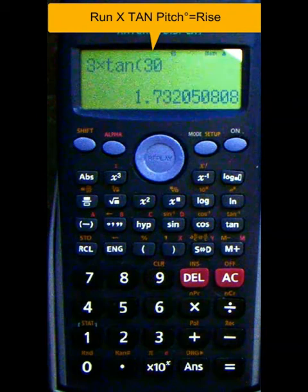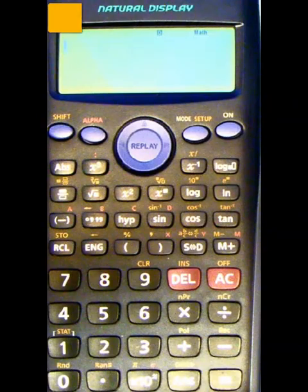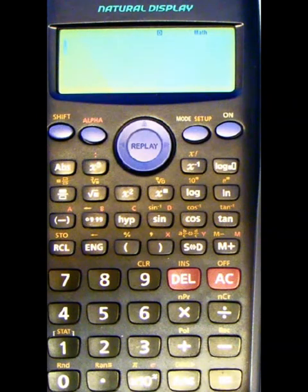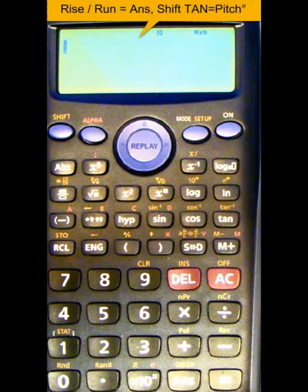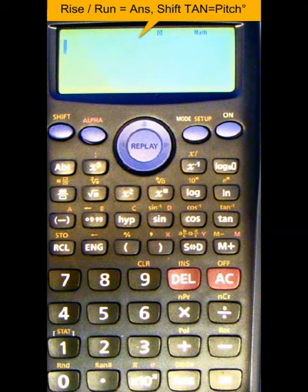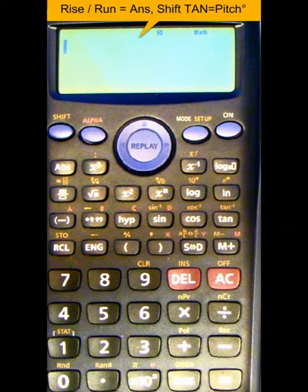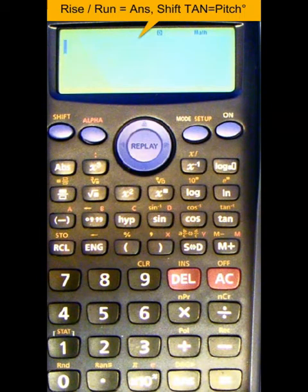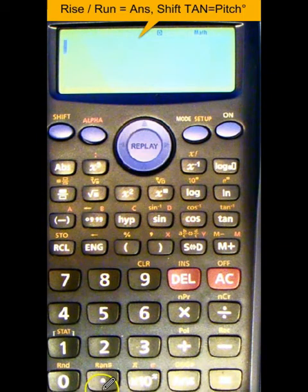For our next example, the two givens are the rise and the run, and what we're after is the pitch. So the formula for this is the rise divided by the run, and whatever answer you get to that, you go shift tan and don't forget to hit equals again.